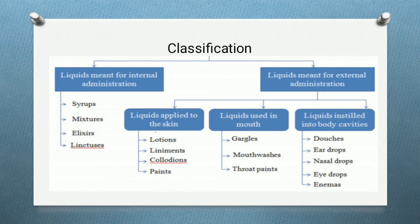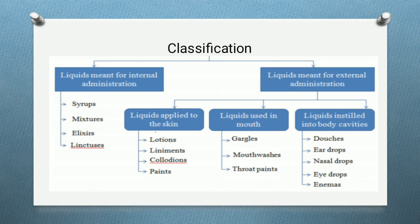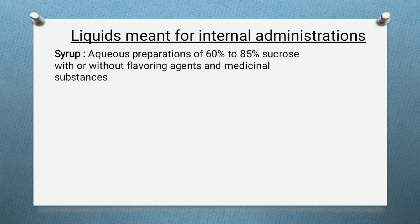Classification of monophasic liquid dosage forms: Liquids for internal administration include syrups, mixtures, elixirs, and linctuses. Liquids for external application to the skin include lotions, liniments, collodions, and paints. Liquids used in the mouth include gargles, mouthwashes, and throat paints. Liquids instilled into body cavities include douches, eardrops, nasal drops, eyedrops, and enemas.